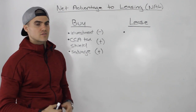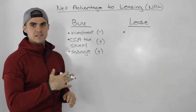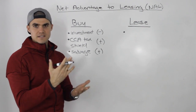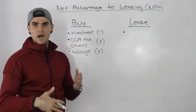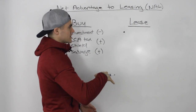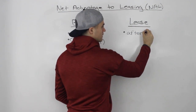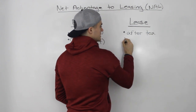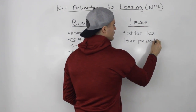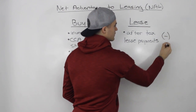Now what about the leasing option? If you think about it, there's really only one cash flow associated with it: the lease payments we have to make. As long as the asset is being used for business purposes, we can deduct the lease payments on our taxes, so we take them on an after-tax basis. The only cash flow we have to worry about with the leasing option is the after-tax lease payments — basically the lease payment multiplied by one minus T — and that is a negative cash flow.